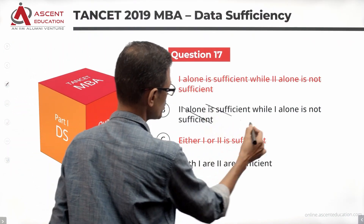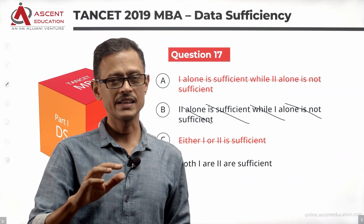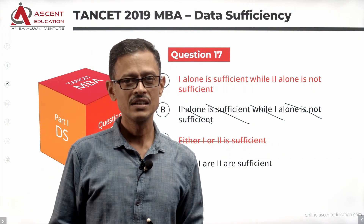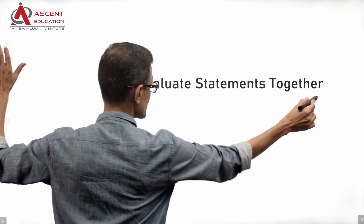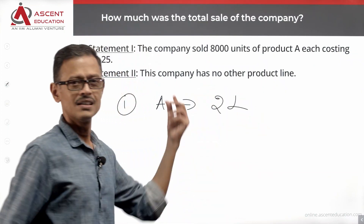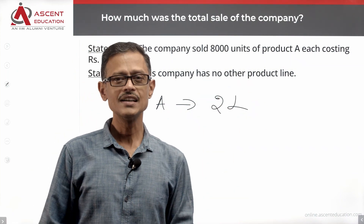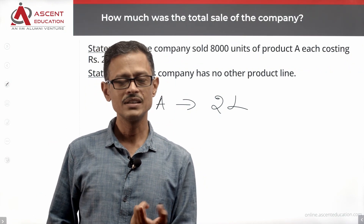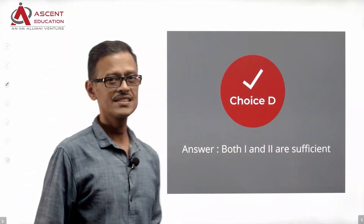Rule out option B. The answer is D. But since we're in learning mode, let's check whether combining the two statements gives us a unique value for the sales of the company. Combining the statements: from statement 1, we know product A sales are 2 lakhs. From statement 2, there is no other product line in the company. So, the total sales of the company equal the sales from product A — 2 lakhs. We got a unique answer by combining the two statements, so statements together are sufficient. Choice C is the answer to this question.